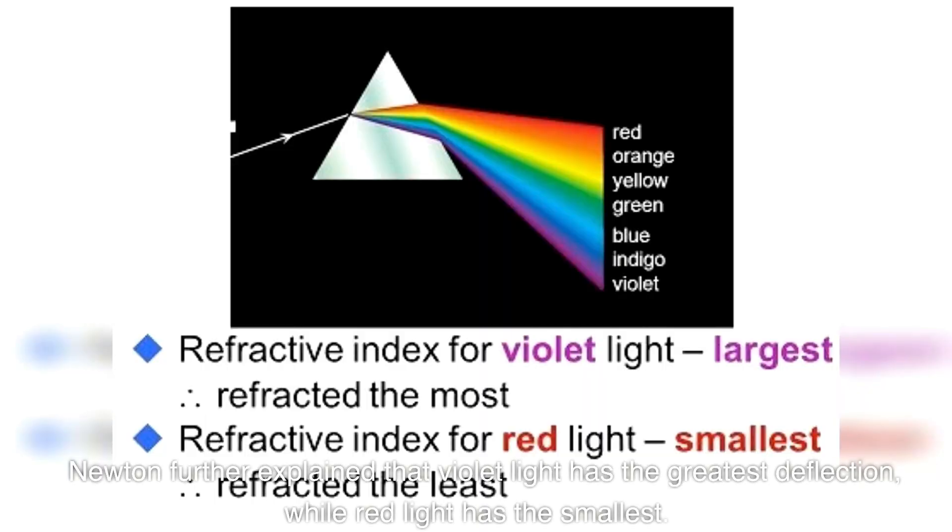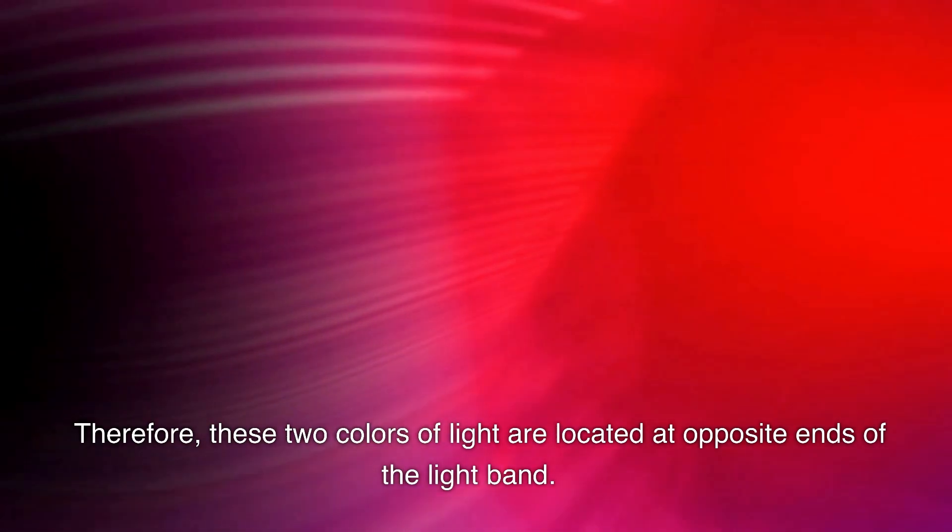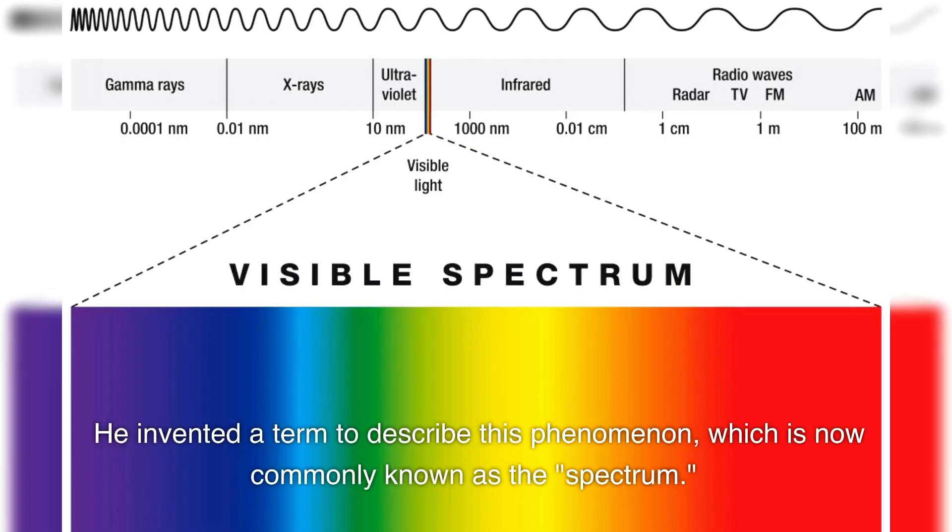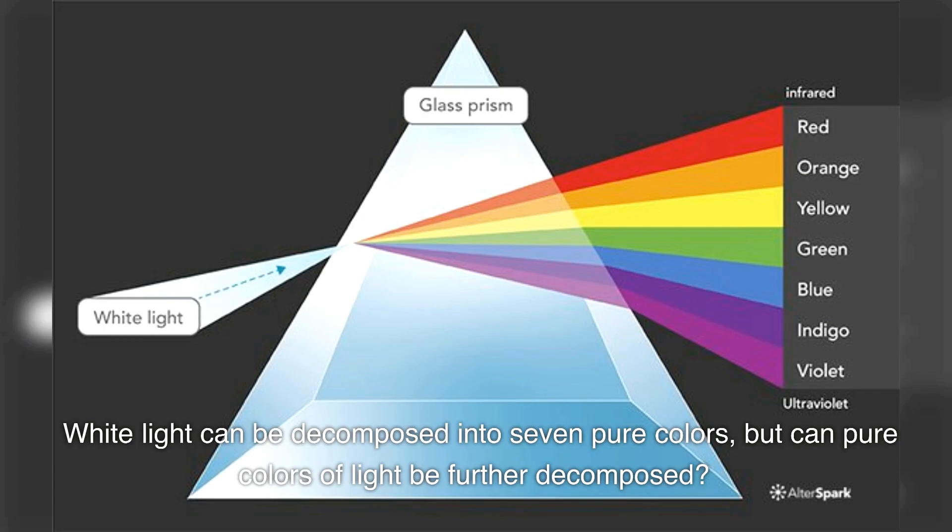Newton further explained that violet light has the greatest deflection, while red light has the smallest. Therefore, these two colors of light are located at opposite ends of the light band. He invented a term to describe this phenomenon, which is now commonly known as the spectrum.